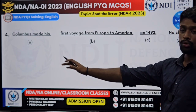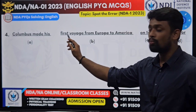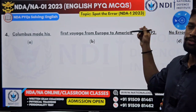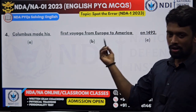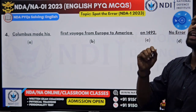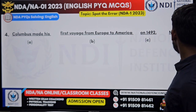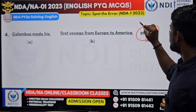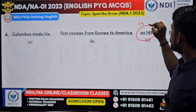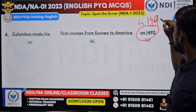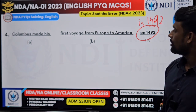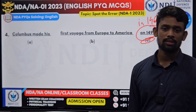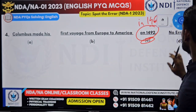Question number four: 'Columbus made his first voyage from Europe to America on 1492.' The issue is 'on 1492' — again a prepositional error. It is not 'on'; it is clearly 'in 1492'. Option C is the part which is wrong in this question.